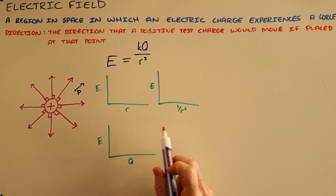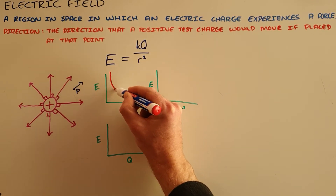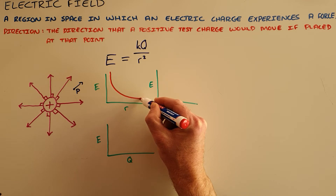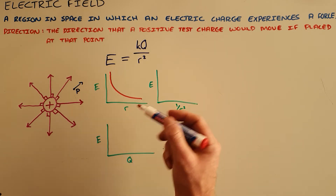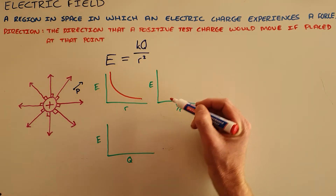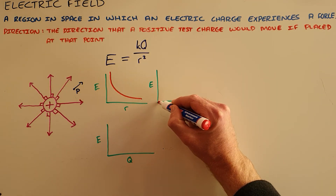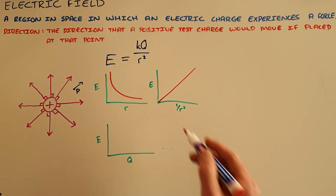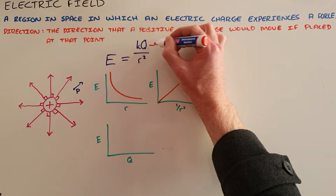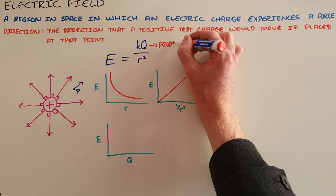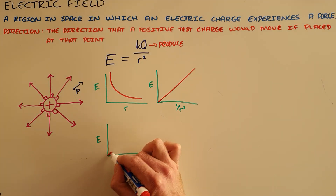From this formula for electric field strength, we can see that the electric field strength is inversely proportional to the distance between the two objects — and not only inverse, but also exponential. From the inverse square law, the electric field strength is directly proportional to one over the distance squared.